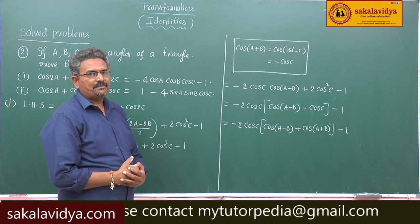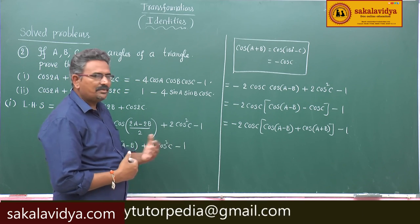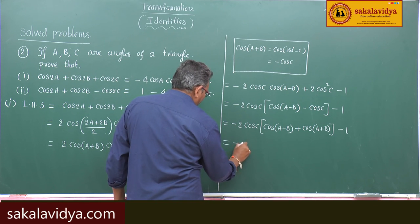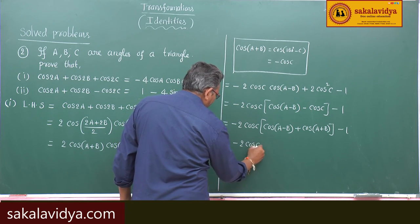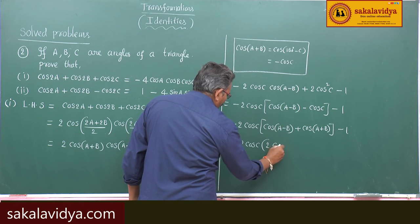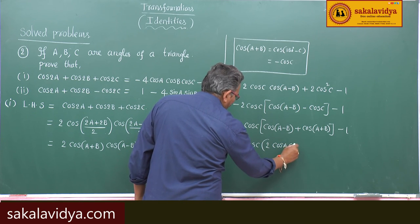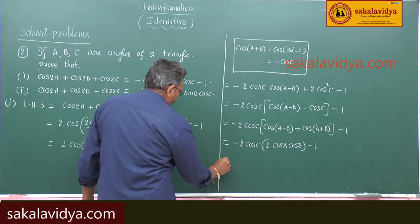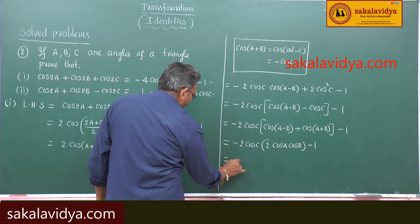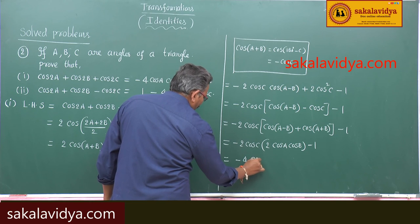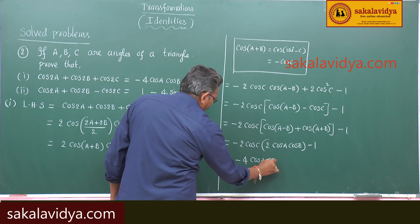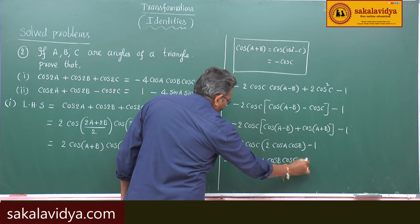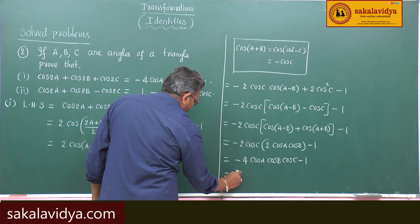Now, cos(a-b) + cos(a+b) equals 2·cos(a)·cos(b). So this gives -2·cos(c)·2·cos(a)·cos(b) - 1, which equals -4·cos(a)·cos(b)·cos(c) - 1, and that equals the right hand side. The proof is complete.